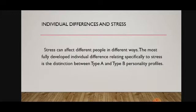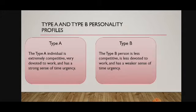Individual differences and stress: stress can affect different people in different ways. The most fully developed individual differences relating specifically to stress is the distinction between Type A and Type B personality profiles. A Type A individual is extremely competitive, very devoted to work, and has a strong sense of time urgency. A Type B person is less competitive, less devoted to work, and has a weaker sense of time urgency.